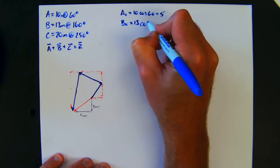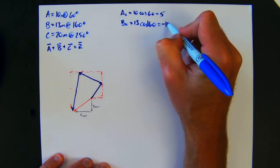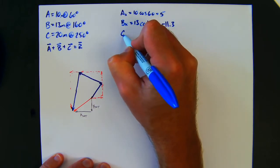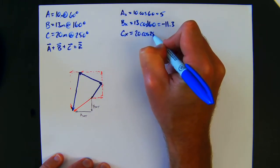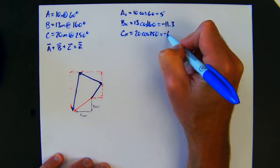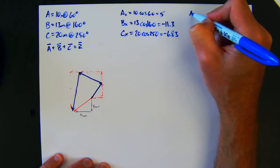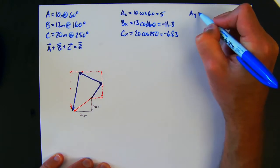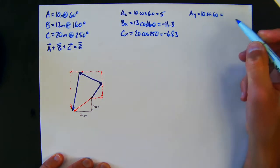And then Cx is going to be 20 cosine of 250, which is going to be negative 6.83. Now I'm going to do the same thing for the y values. So Ay is going to be 10 sine 60—y sine because x is cosine—8.66.